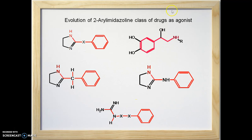When we look at some structures in this class which are alpha receptor agonists, we find that there is no imidazoline ring present. Instead, it is a guanidino group separated from the phenyl ring by a two-atom bridge. These compounds are also called open ring imidazolines.